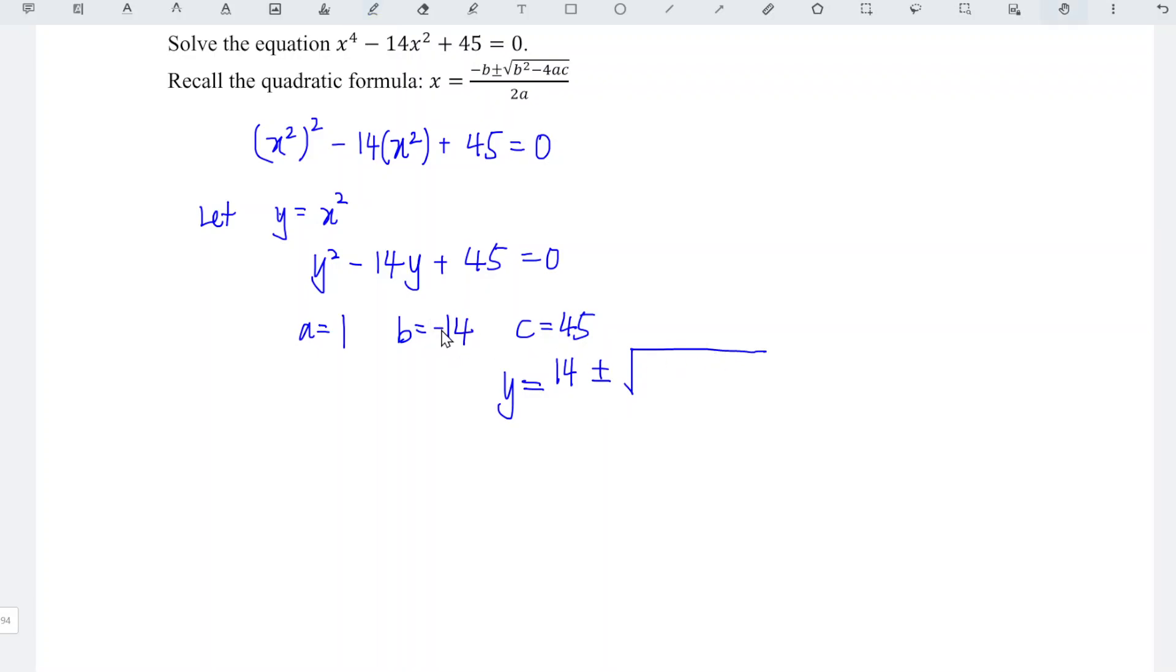b squared is 196, positive or negative doesn't matter since we square it. Then minus 4ac, all divided by 2a.